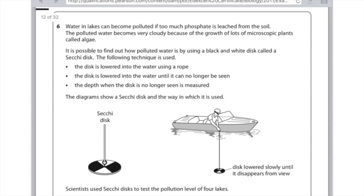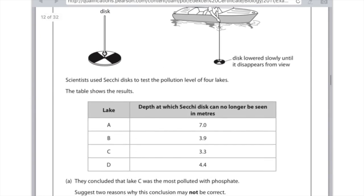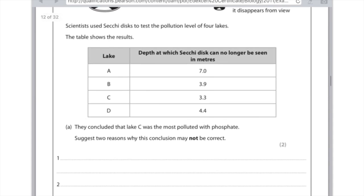Here's the first past paper question. Water in lakes can become polluted if too much phosphate is leached from the soil. The polluted water becomes very cloudy because of the growth of microscopic plants called algae. It's possible to find how polluted water is by using a black and white disc called a Secchi disc. The disc is lowered into the water using a rope until it can no longer be seen, and the depth is measured. Here are some results from various lakes. They concluded that Lake C was the most polluted with phosphate. Give two reasons why this conclusion may not be correct.